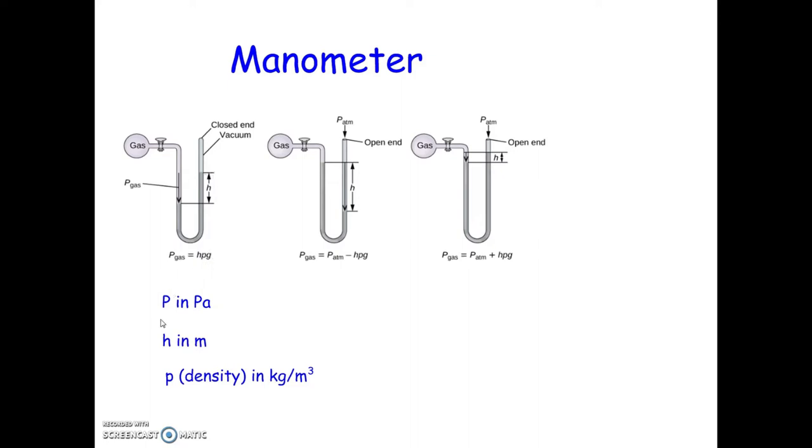The pressure is going to be found in pascals. h is the height of that column, the difference in height between the gas side, which will be lower because that's where it's being pressed down. So this height measured in meters. And the density is ρ in kilograms per meter cubed. And then g is the acceleration due to gravity, 9.81 meters per second squared.